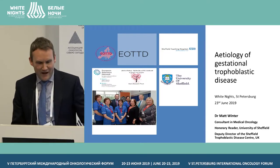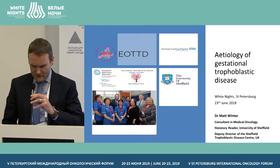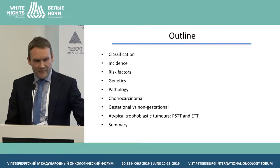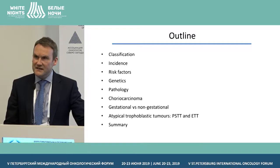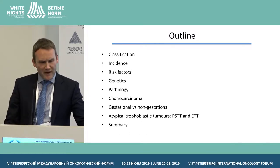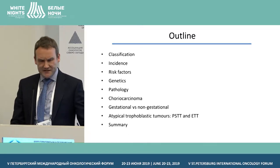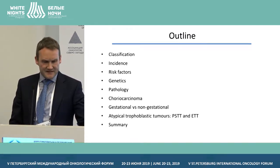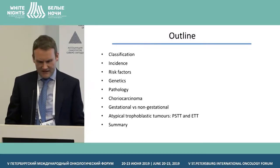Apologies in advance to any pathologists in the room, because I am not a pathologist. I think there will be some overlap with the previous talk. This is the outline: I'll be talking about classification of gestational trophoblastic disease, incidence and risk factors, genetics, pathology, and then the specific types of gestational trophoblastic neoplasia — choriocarcinoma and the atypical forms, placental site and epithelioid. We'll also talk about gestational versus non-gestational tumors and why that's prognostically important.